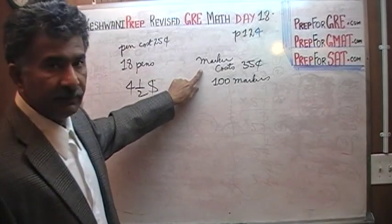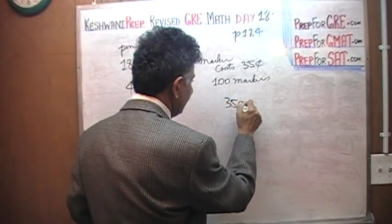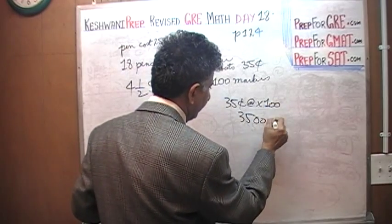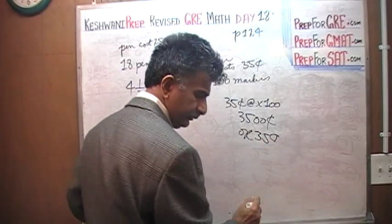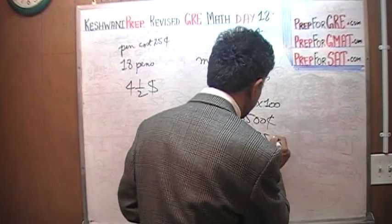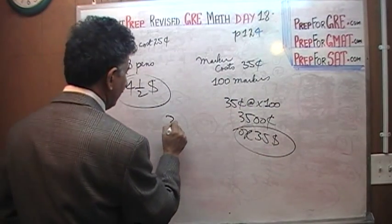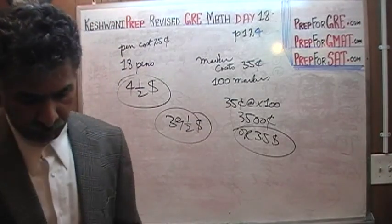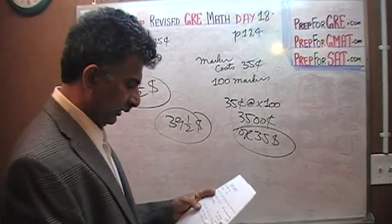Here we are buying 100 of them at 35 cents each. 35 cents each times 100 is going to make 3,500 cents or $35. So we have $35 and $4.50. We have $39.50. Now in a question like this, I'm going to actually write this down so that you understand that I'm making a big fuss about it.